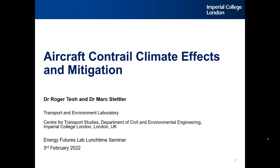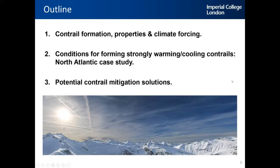It's a bit technical, but I'll try as much as I can to simplify what I have so it's easy to understand. Here's the outline of the talk — there are three main sections. First, I will talk about the basics of contrails, mainly the science and physics behind it, our current understanding on the contrail formation, properties, and how it affects the climate. I'll then move on to the second section, where I look at the set of conditions where contrails are strongly warming and cooling, based on a case study in the North Atlantic. Finally, I'll discuss briefly about potential contrail mitigation solutions that are currently available and proposed, and their limitations.